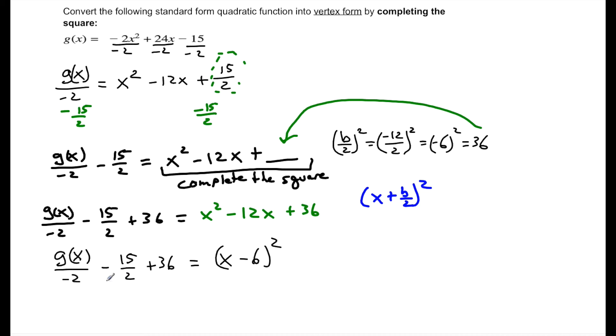So we've completed the square, but now we're just going to deal with these other terms on the left side. First, what I'm going to do is, because this is that funky term over negative 2, I'm going to just multiply everything on the left side by negative 2 and multiply the right side by negative 2 also.